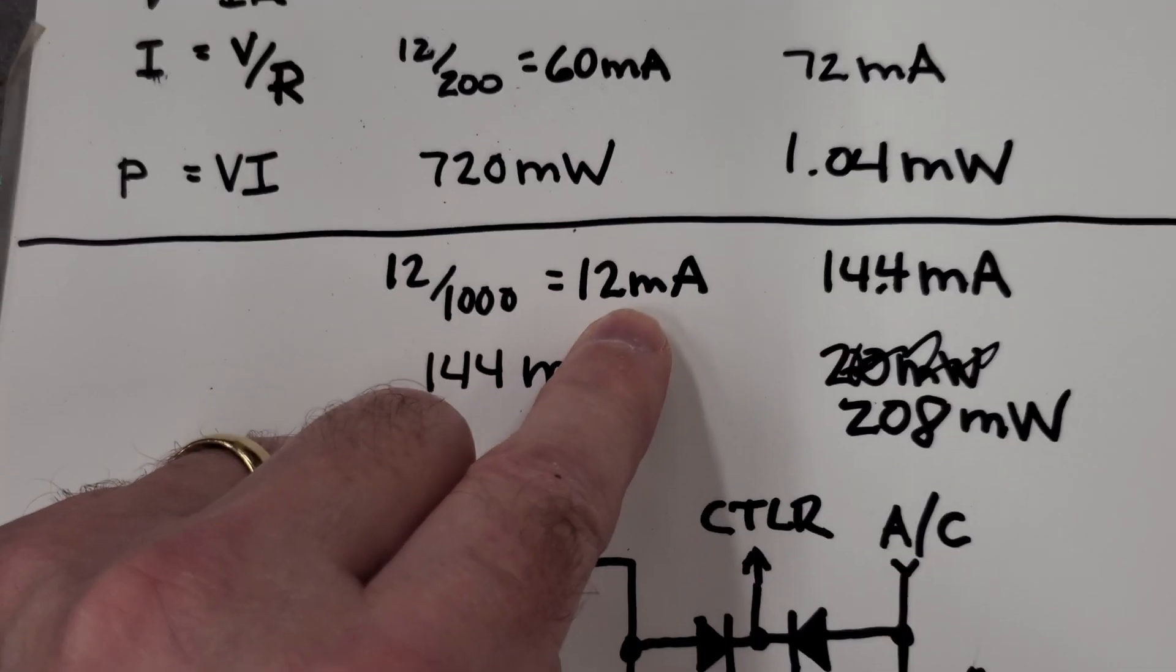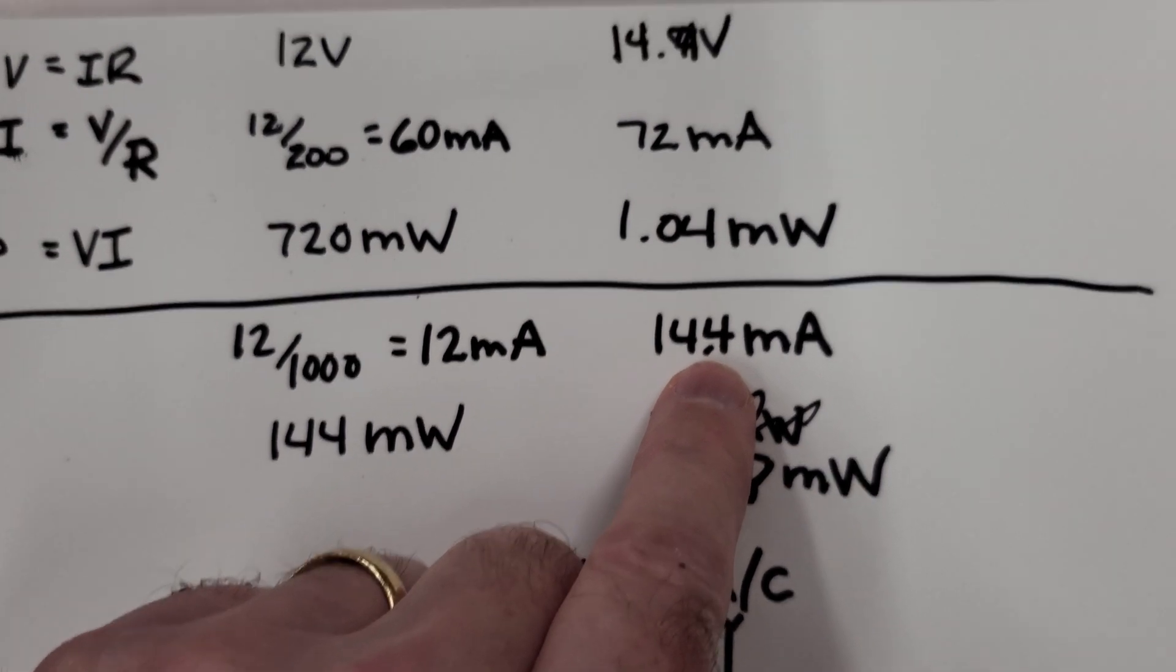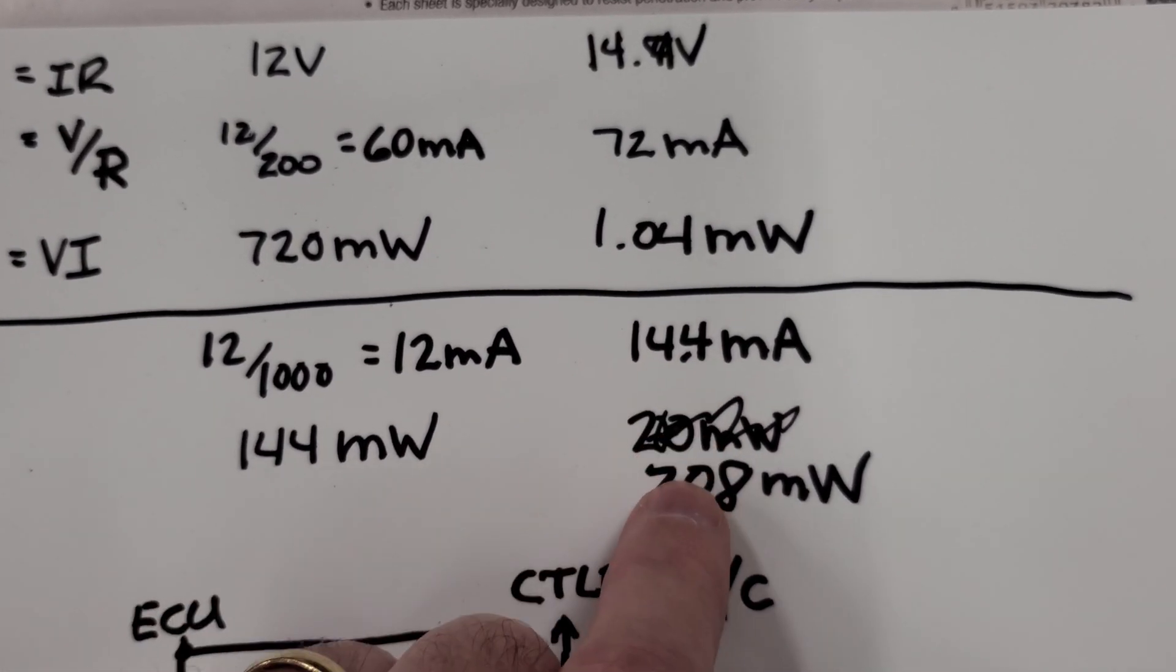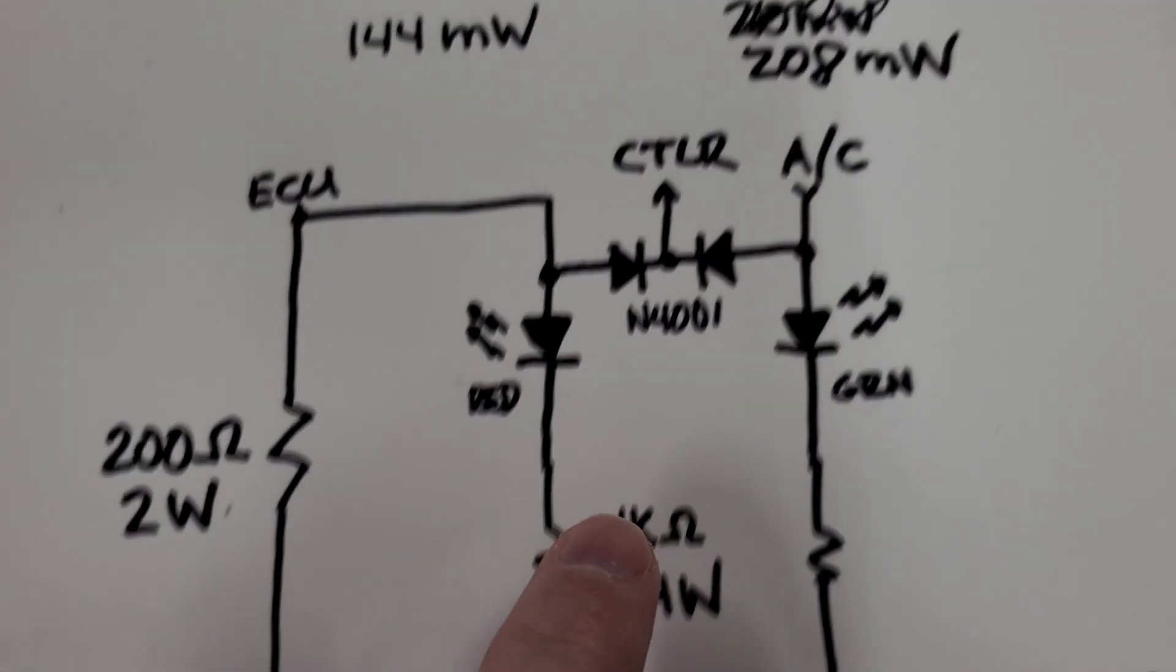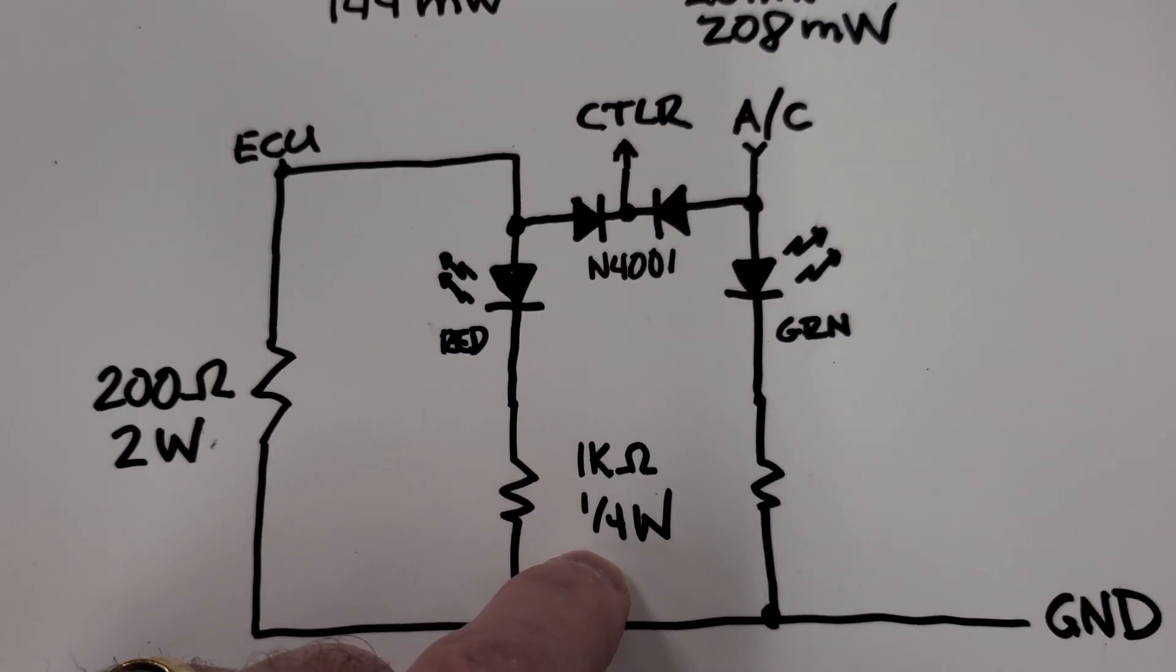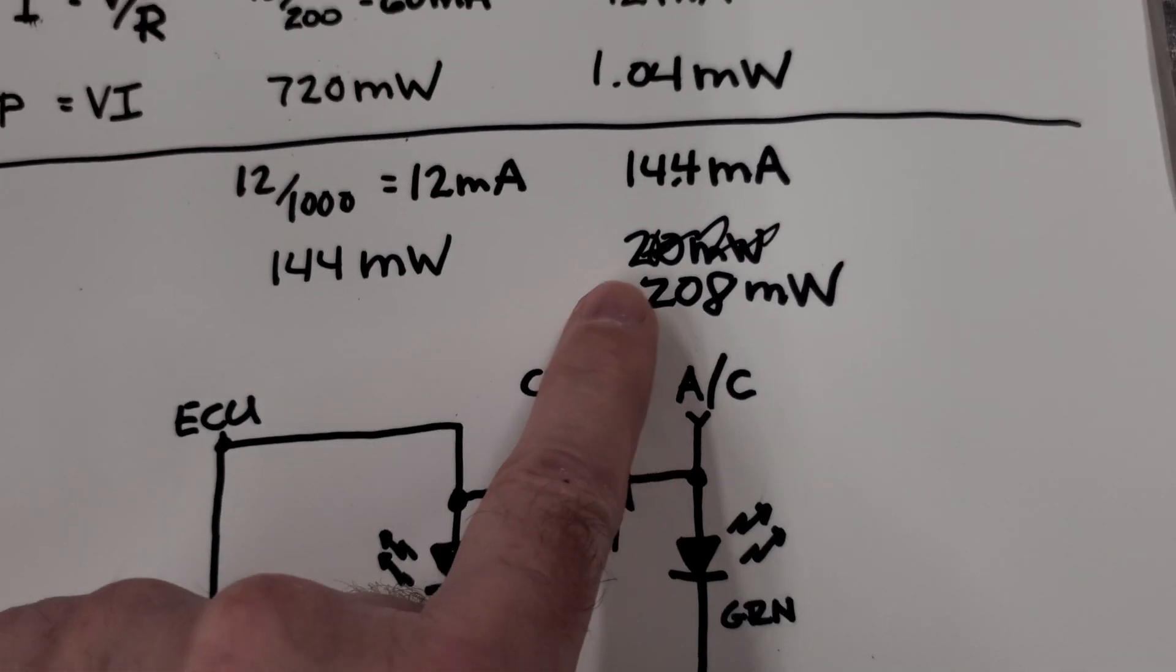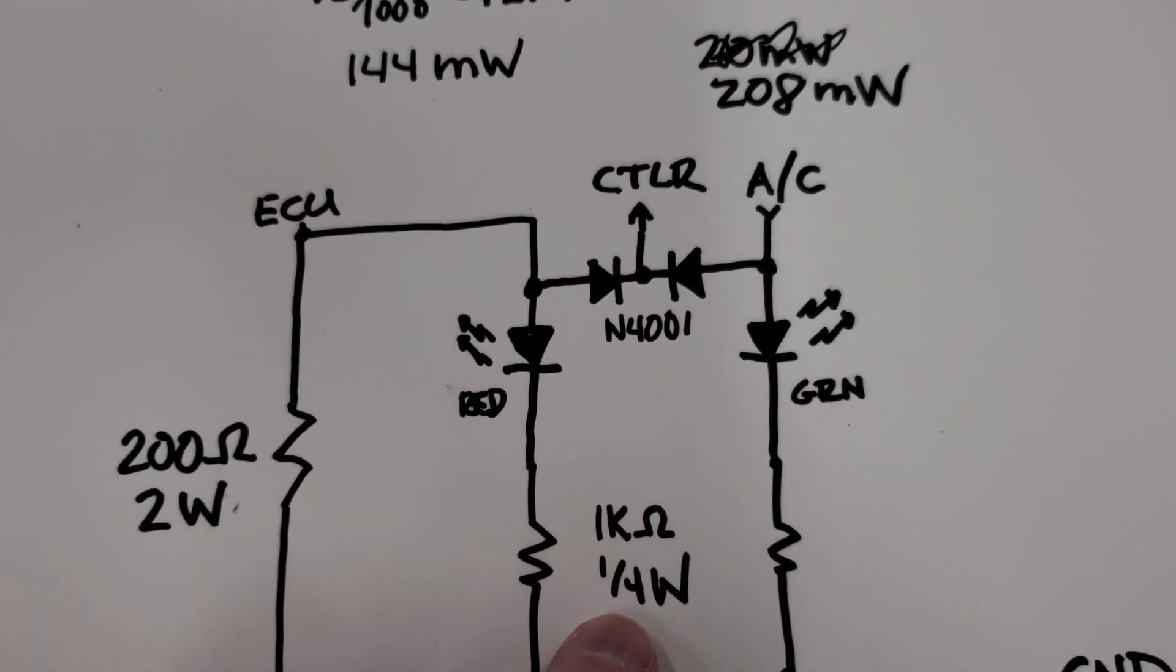For the little resistors they're 1k. 12 volts divided by a thousand ohms is 12 milliamps, which works out to 144 milliwatts. At 14.4 volts it's 14.4 milliamps which works out to 208 milliwatts, which is just under a quarter watt. I forgot to calculate that before I put the whole thing together. 250 milliwatts is our budget for those resistors, so we're good.